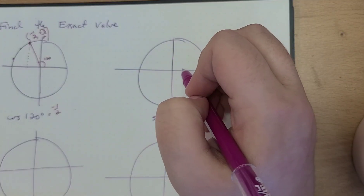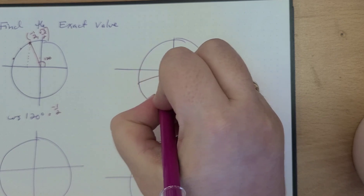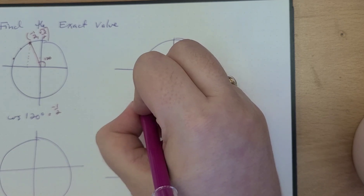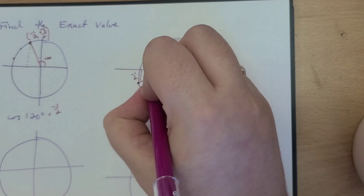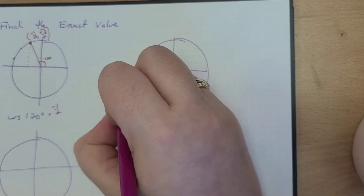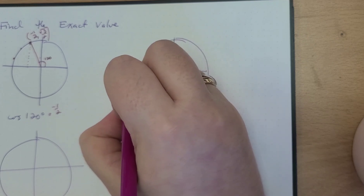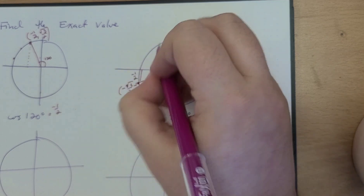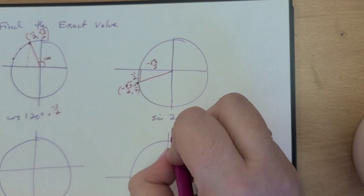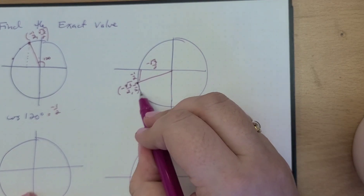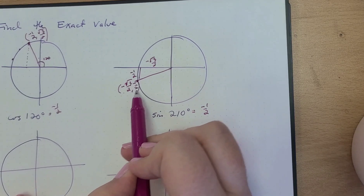What about sine of 210? Sine of 210 — that's going to be 180 plus 30, so that's going to be here. We know that this is going to be negative one half and this is going to be √3/2. So we're going to have the point (−√3/2, −1/2). Sine of 210 is going to be equal to negative one half, which goes cosine, sine.